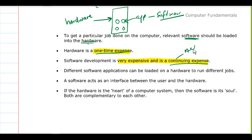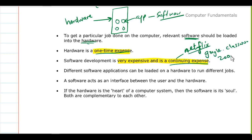Think about Netflix — for you to keep using it, you have to keep paying because they are giving you ongoing services. Zoom is another example — I have to pay every month to continue using that software. Software is normally really expensive, and some of it must be paid for continuously, though some are free. Different software applications can run on the same hardware to perform different jobs.